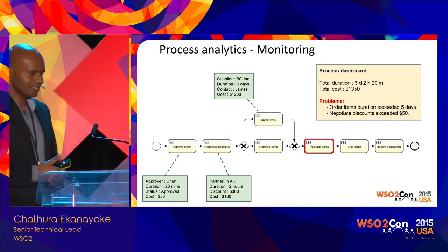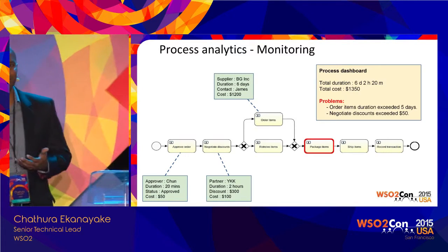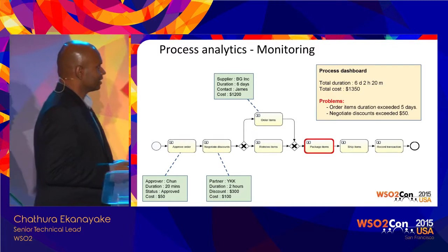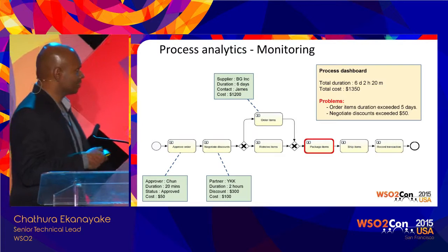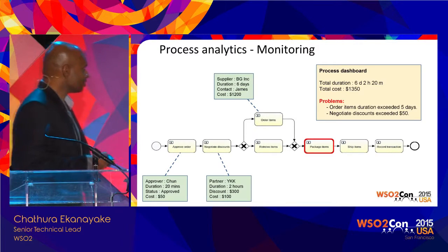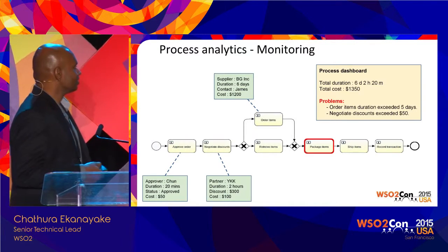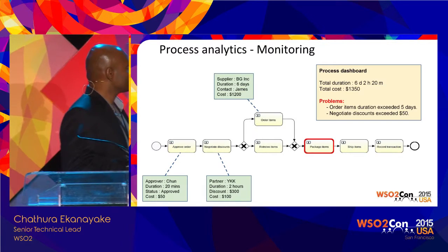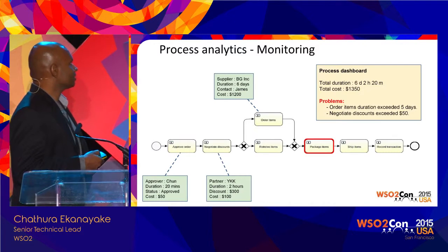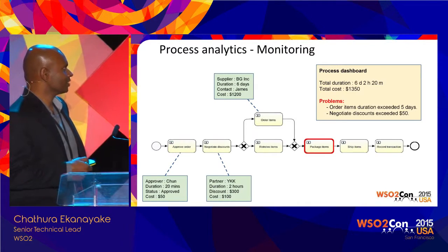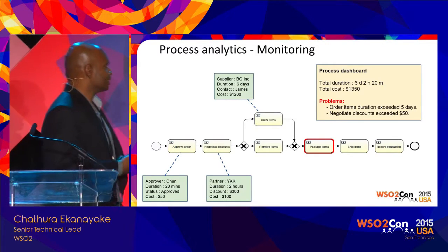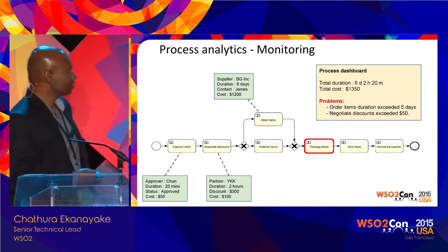One thing we can do is process monitoring — monitoring how existing processes are performing. We can get a dashboard where, by mapping events to the process model, we can highlight the current position of the process and visualize data values of completed tasks. For example, it might show that the 'order items' task has taken six days and the supplier was BG Ink. We can also compute values like total duration taken for the process so far and total cost.